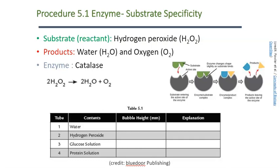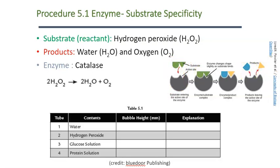The first procedure, 5.1, addresses the idea that each enzyme has a specificity — it acts like a lock that should interact with one substrate. Where the substrate interacts with the enzyme is called the active site, which is like that lock, and the substrate is like the key that fits into that lock. For every enzyme, we should only expect activity if we put that enzyme in the presence of its proper substrate. So in procedure 5.1, we're really testing enzyme-substrate specificity.